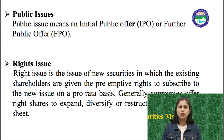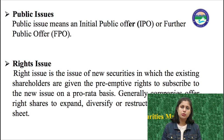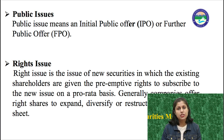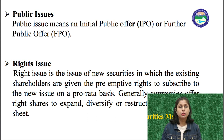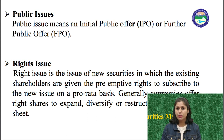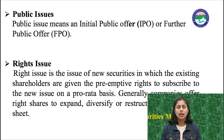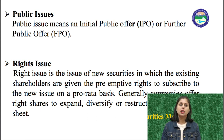Public issue means an Initial Public Offer — which we also call an IPO — or a Further Public Offer (FPO). An IPO is when a new company comes to market needing funds and capital to run the company, so it launches its shares in the market. Through the IPO, the company raises funds from the public. A Further Public Offer (FPO) occurs when an already existing company that already has shares in the market wants to expand or diversify, so it brings more shares to the market again to raise additional funds.